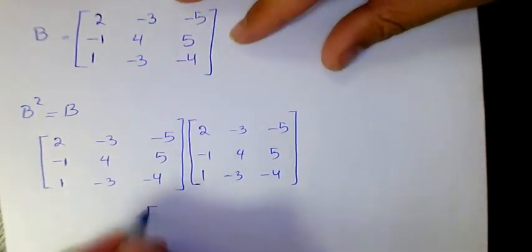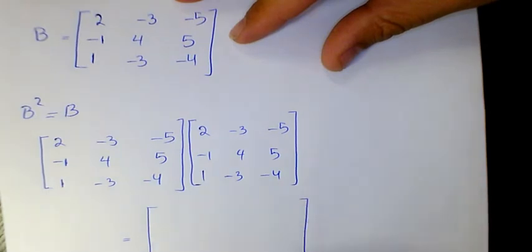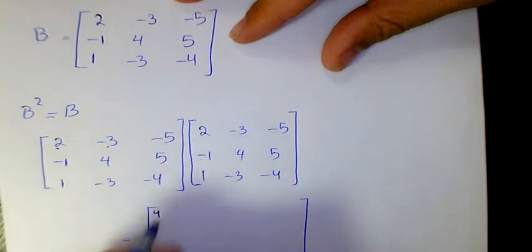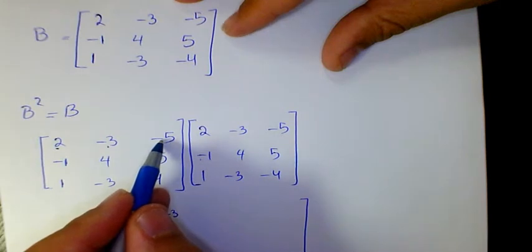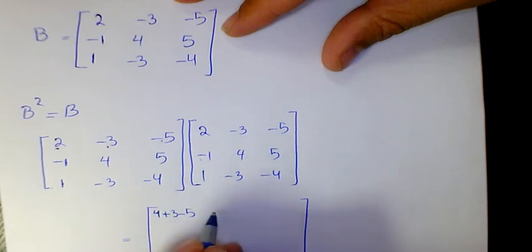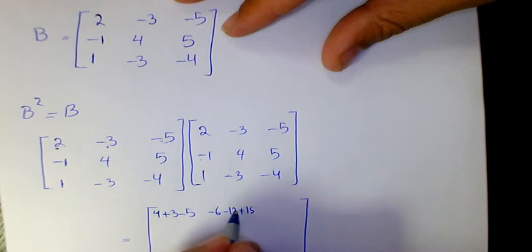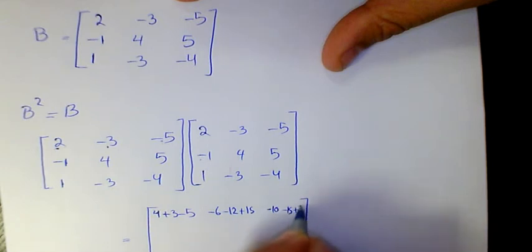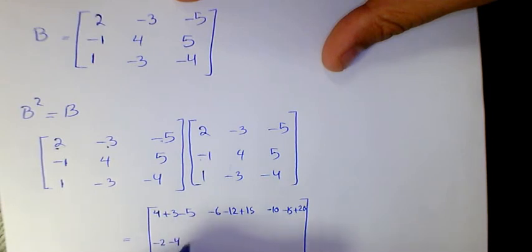Multiplying B by itself: two, negative three, negative five, negative one, four, five, one, negative three, negative four — times itself. That gives us two times two is four, negative three times negative one is three, negative five times one is negative five. This row times this column gives negative six, negative twelve, plus fifteen. Here we have negative ten, negative fifteen, plus twenty.